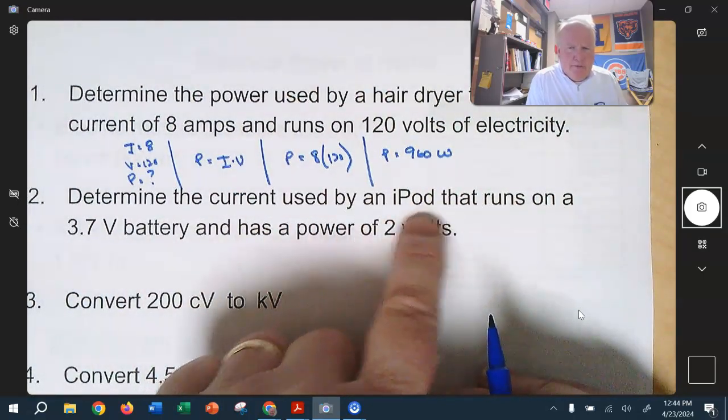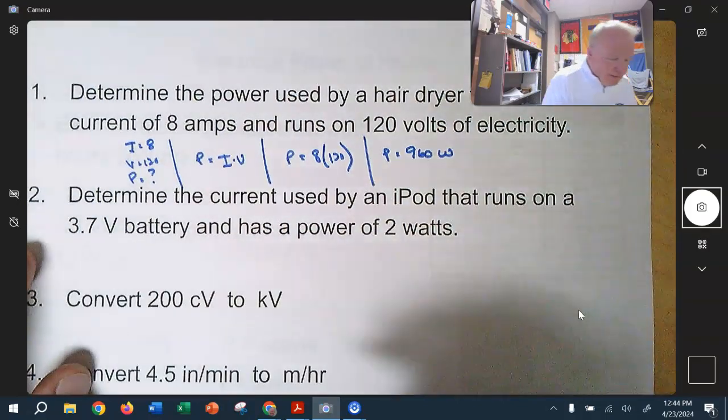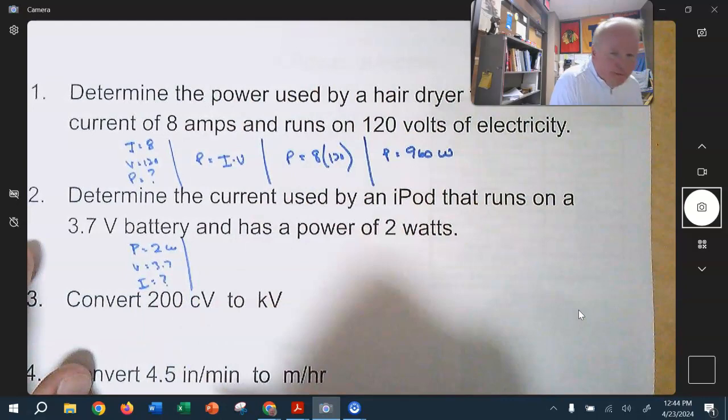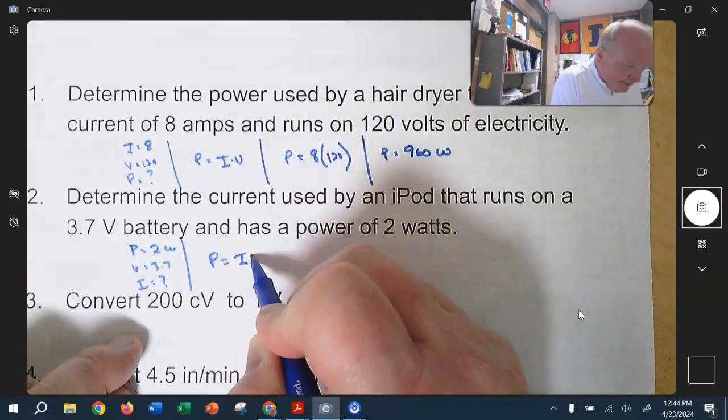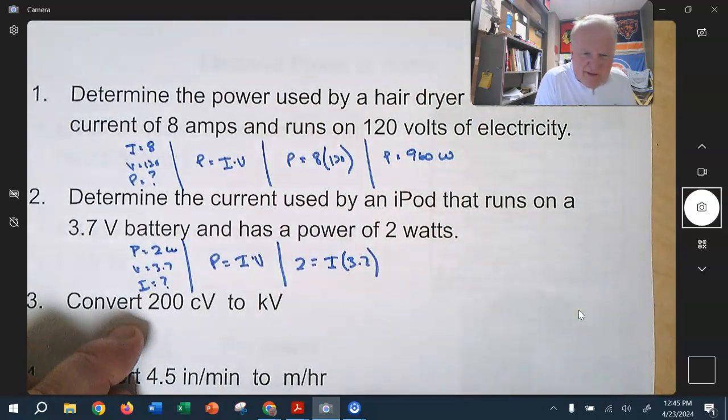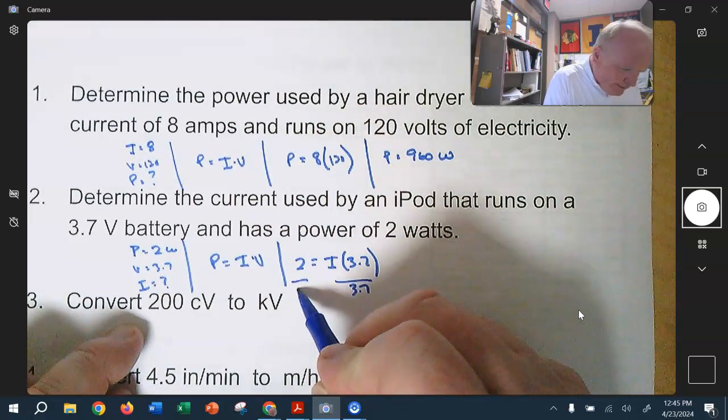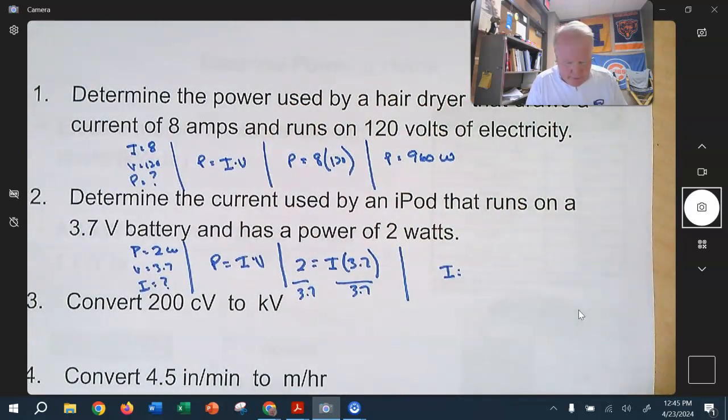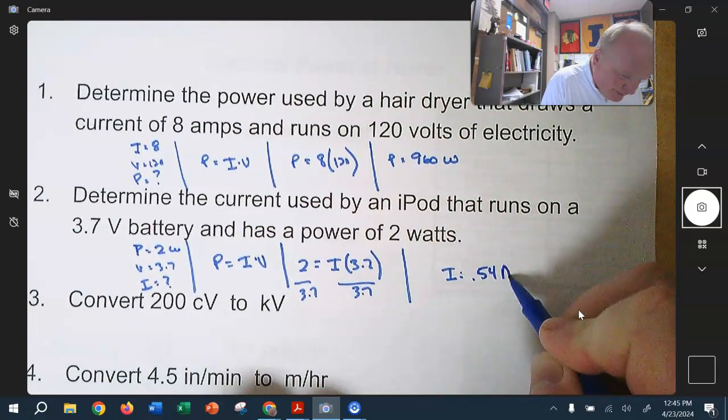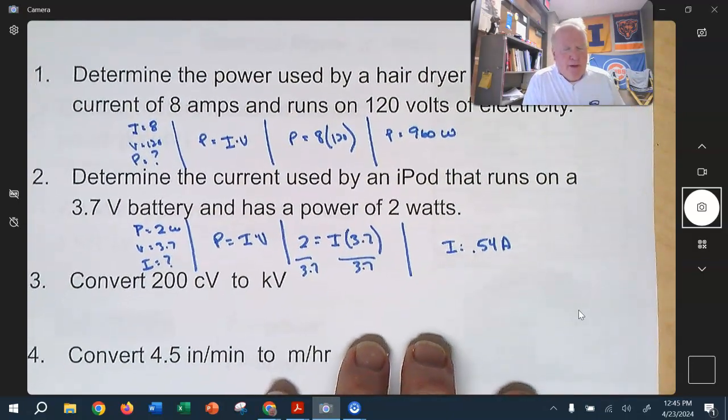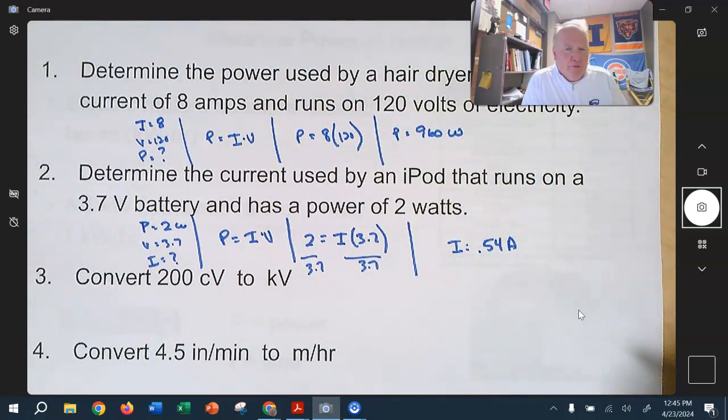Determine the current used by an iPod that runs on 3.7 volt battery and has a power of 2 watts. So if we just write down what they've got, they gave us a power of 2 watts, they gave us a voltage of 3.7, and they want to know the current. We just write down the equation, P equals I times V. And so power of 2 is equal to I times 3.7. And we'll just divide by 3.7 on both sides. And we'll get I is equal to 2 divided by 3.7. So a little bit more than a half, 0.54. So I is equal 0.54 amps. Now, there's a couple of questions in this PowerPoint that maybe you guys covered, maybe you didn't cover. But I'm just going to go over it really quickly with you guys.